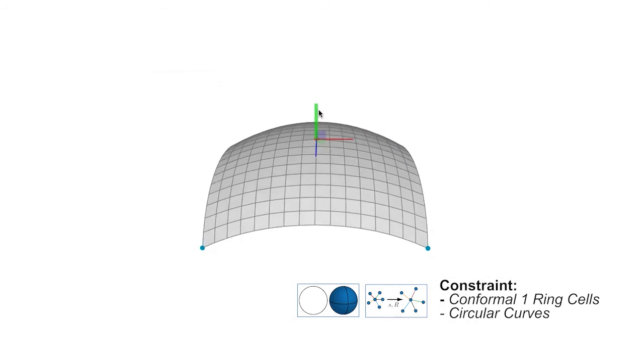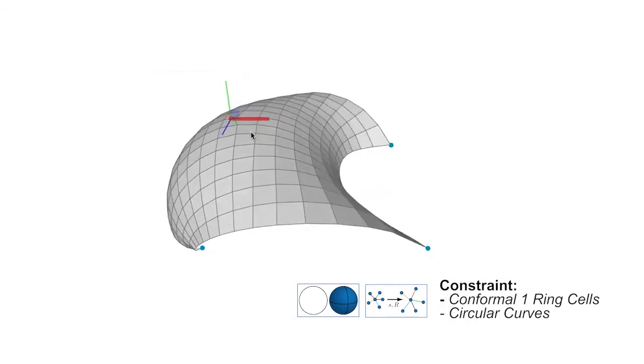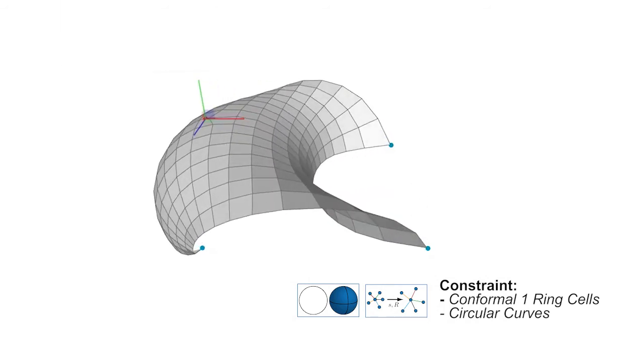Here we constrain the parameter lines of a plane to lie in circles. In combination with the similarity constraint on the one-rings, this yields another interesting design tool for shape exploration and form finding.